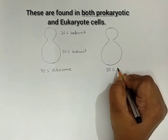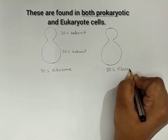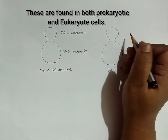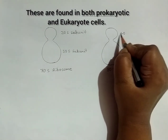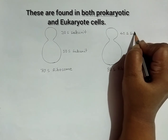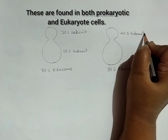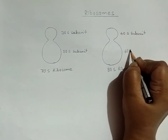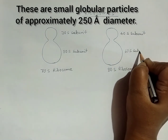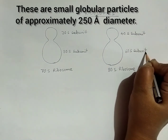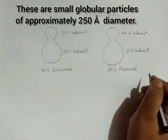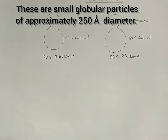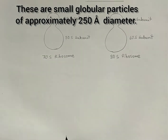Ribosomes are found in both prokaryotic and eukaryotic cells. They are small globular particles of approximately 250 angstroms in diameter.